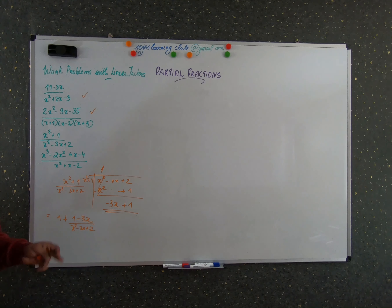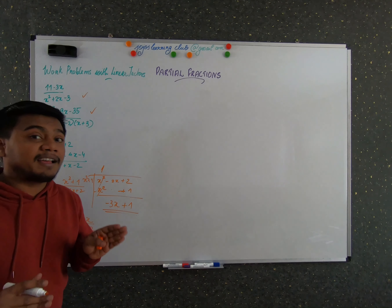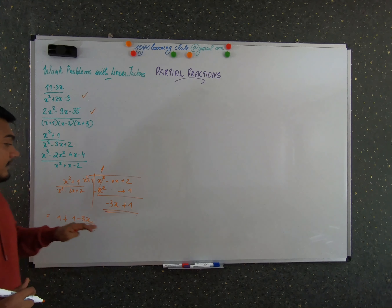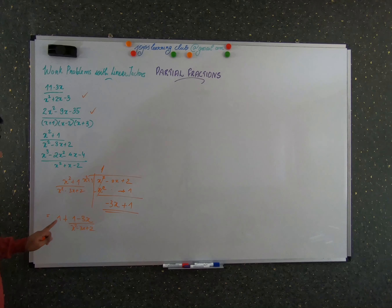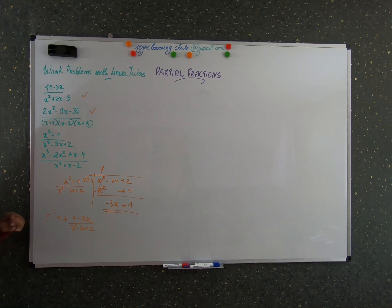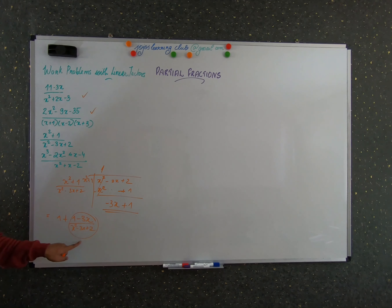Just as with long division of numbers, you write the result as quotient plus remainder by divisor. The same I have done with polynomial division. Now you can see that the degree of the numerator is 1 degree less than the degree of the denominator.